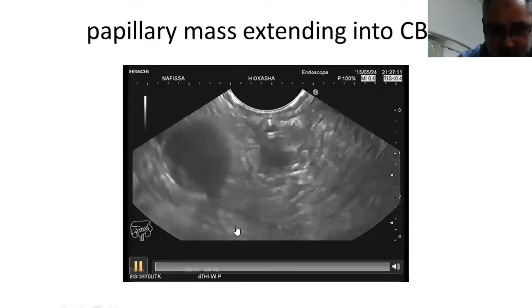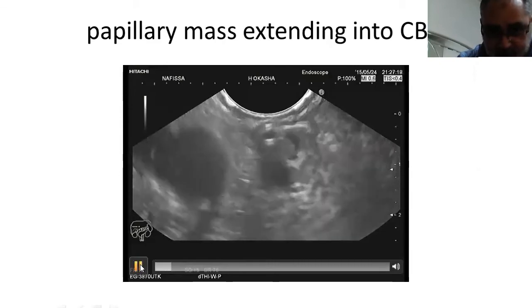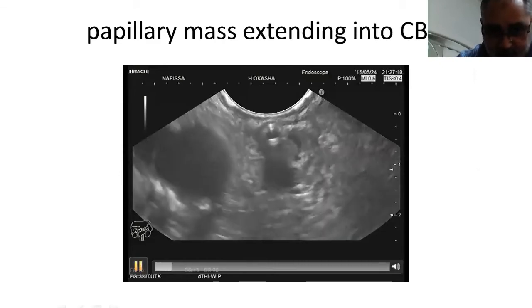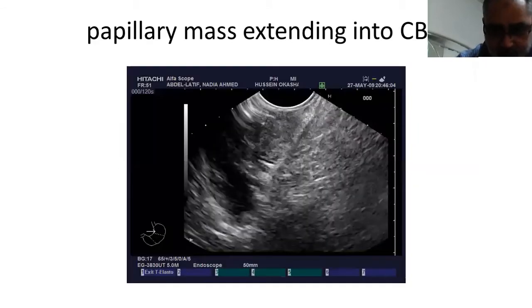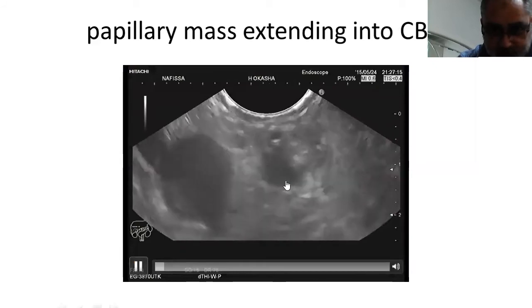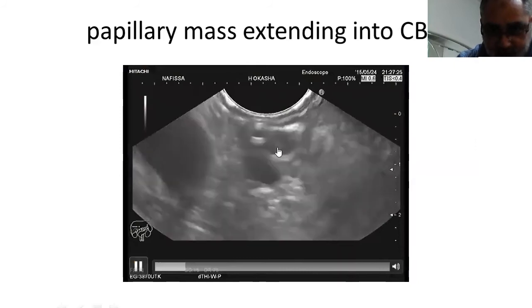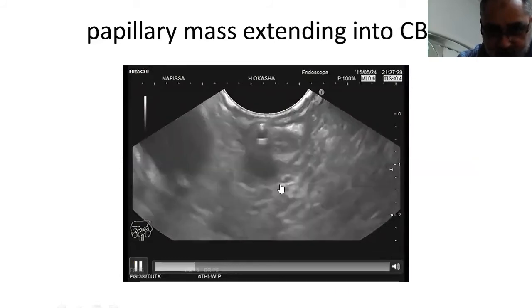This video shows a mild extension of the papillary mass inside the common bile duct. Now inside the second part of the duodenum at the level of the papilla, here we can see a small papillary mass and the common bile duct with a stent inside and the pancreatic duct. And here we can see very small extension of the papillary mass inside the common bile duct, and this is the aorta.